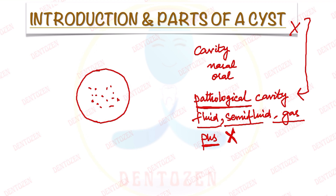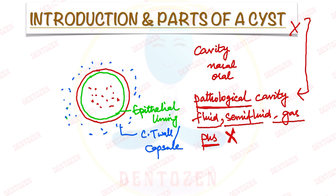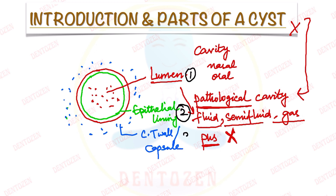Now this cyst is lined by a layer. A layer of epithelial cells forms the lining of the cyst, which is known as the epithelial lining, which can be of different types. Then the outermost part of the cyst is made up of a wall, which is made up of connective tissue. This wall of the cyst is known as the connective tissue wall, also called the capsule of the cyst. So we have three parts: the central empty space called the lumen, the epithelial lining, and the connective tissue wall or capsule.